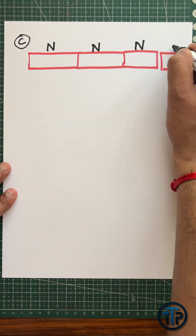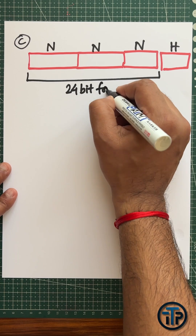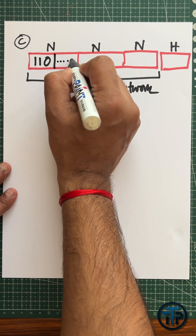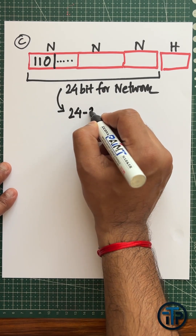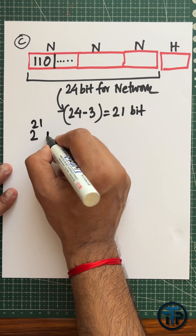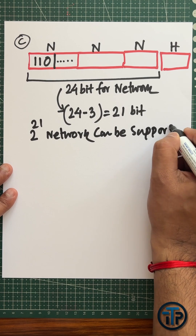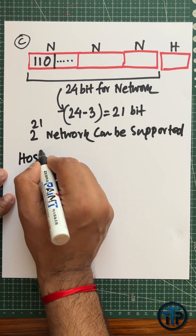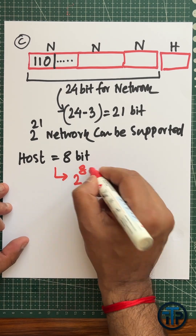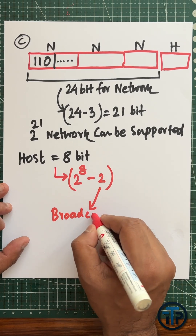In Class C, the remaining 8 bits are used for the host address. The first 3 bits are used to denote the class, so 24 minus 3 equals 21 bits can be used to denote networks. Therefore, 2 to the power 21 networks can be supported. For hosts per network, that is 2 to the power 8 minus 2.